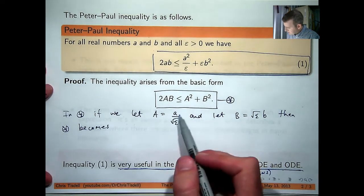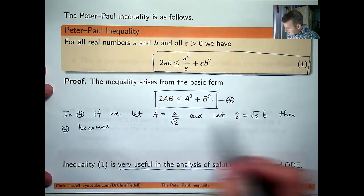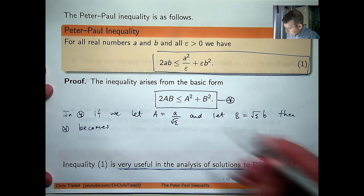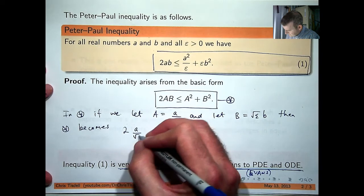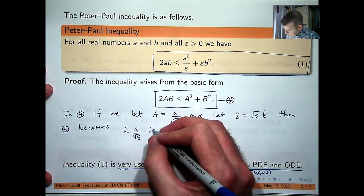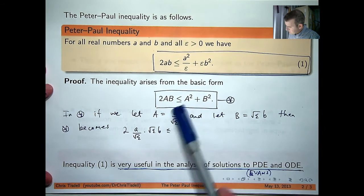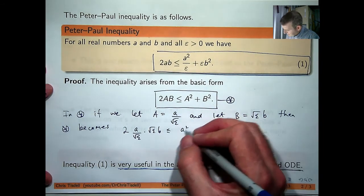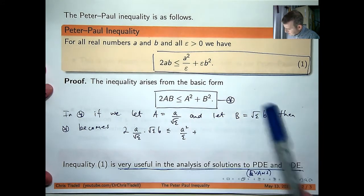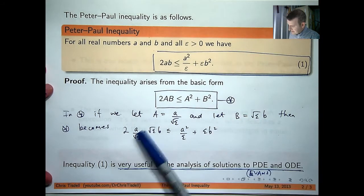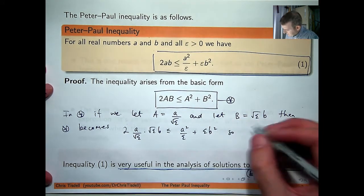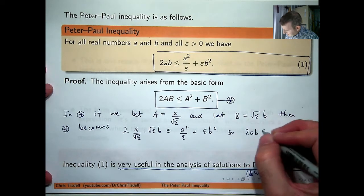So on the left-hand side, you're going to get 2 times that times that, so the root epsilons will cancel out. Less than or equal to the square of that, plus the square of that. So you can cancel off these, and you get the following.